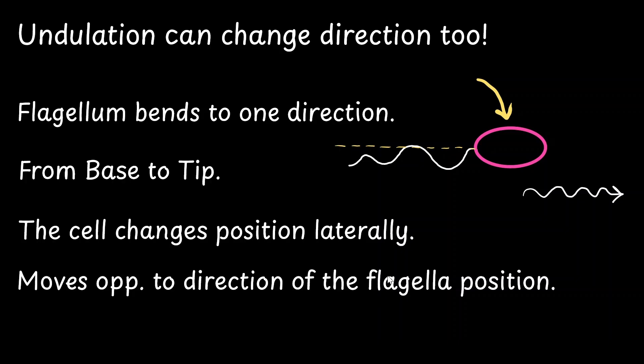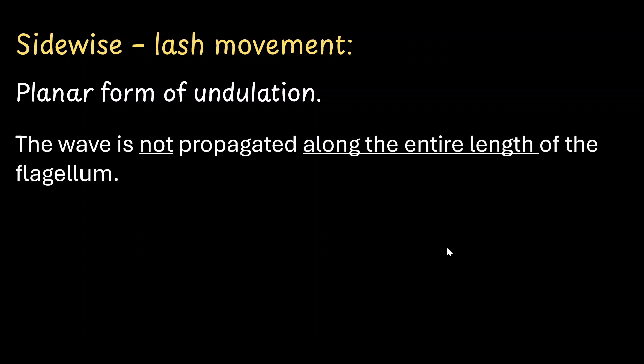Undulations in flagella can be categorized into two varieties. First is called the sidewise lash movement. It is considered to be a planar form of undulation, meaning it is going to happen in just one plane, X and Y. This particular plane is going to be parallel to that of the organism's body surface. The wave is not propagated along the entire length of the flagellum, but it happens in small bits and pieces throughout the length.